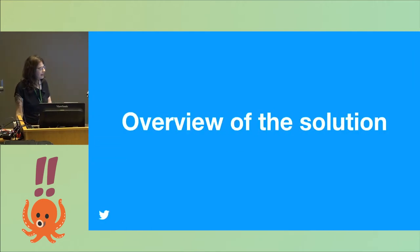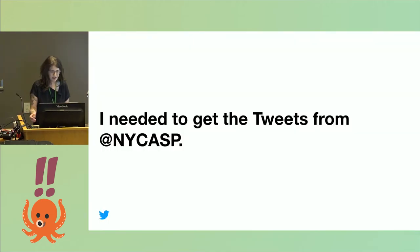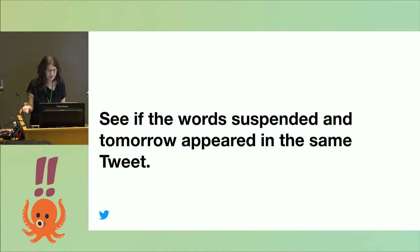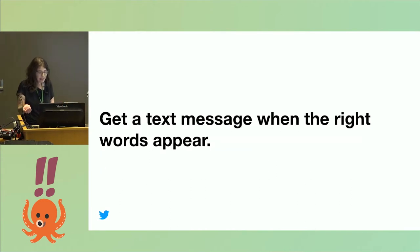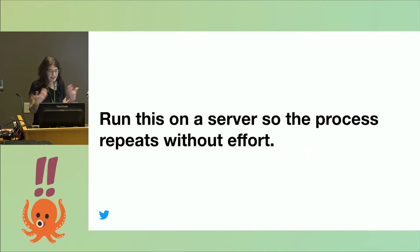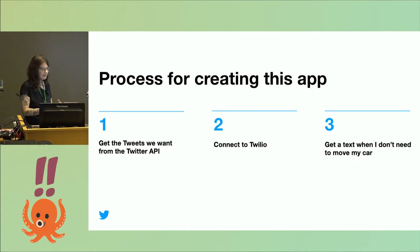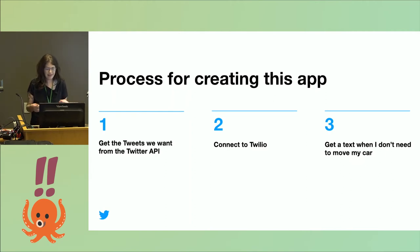So I built a solution using Twitter data and Twilio to send myself a text message whenever I didn't have to move my car. I needed to get tweets from the NYC ASP Twitter handle, see if the words 'suspended' and 'tomorrow' appeared in the same tweet, get a text message when the right words appeared, and run this on a server so it repeated without any effort from me.